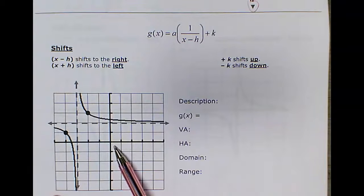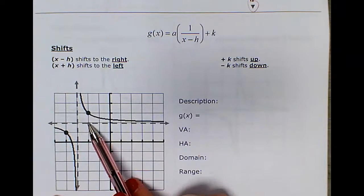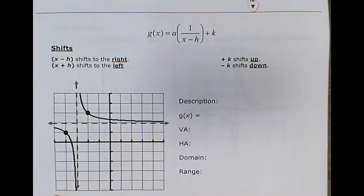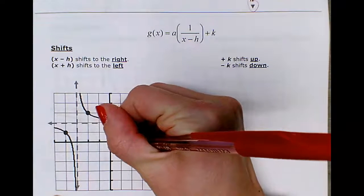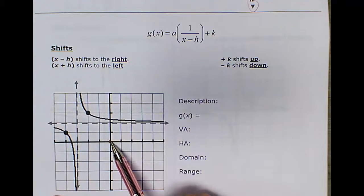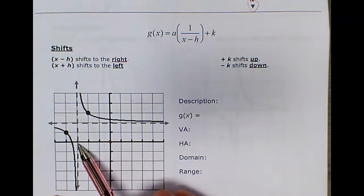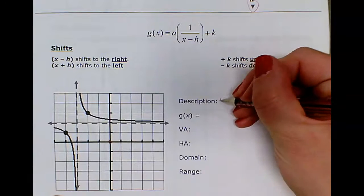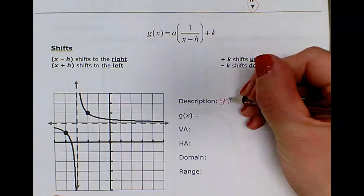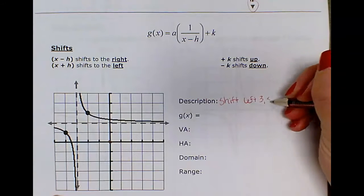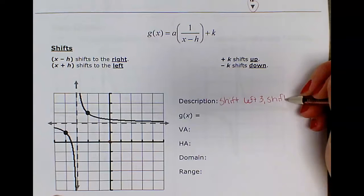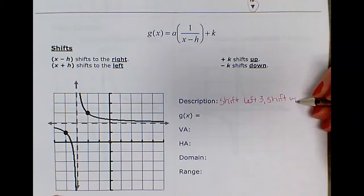In this problem, the asymptotes are no longer along the axes — the graph has been shifted. Originally the asymptotes crossed at the origin, but now they're crossing at a new location. Looking at the movement, the graph has shifted 3 units to the left and 2 units up.